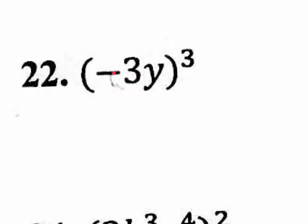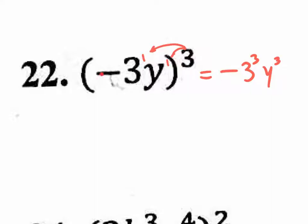For problem 22 — we have parentheses with the negative on the inside. The exponent is odd, so our answer is going to be negative. So we put equals negative, then distribute the three to the one: three to the third, and y to the third. We already know the answer is negative, so bring down the negative and go three to the third: three times three is nine, nine times three is 27. Bring down the y to the third. Answer: negative 27 y to the third.